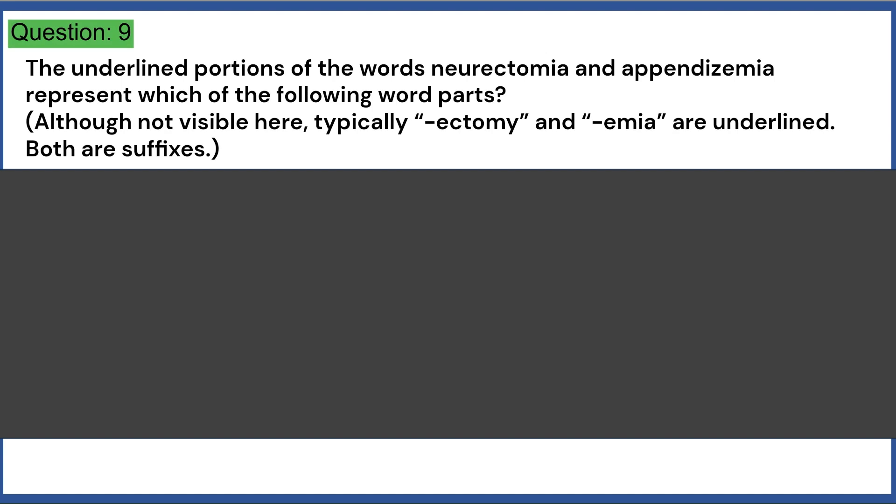The underlined portions of the words neurotomy and appendicemia represent which of the following word parts? Although not visible here, typically ectomy and emia are underlined. Both are suffixes. a. Root b. Combining vowel c. Suffix d. Prefix e. None of the above. Answer, C.